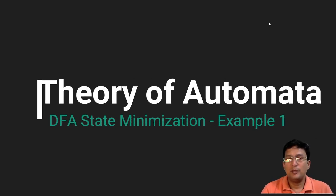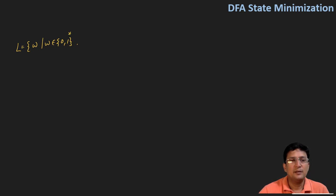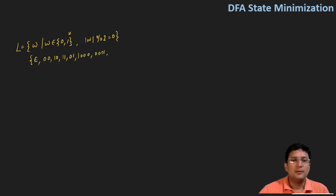In this lecture, we are going to discuss the minimization of the DFA. The minimization can be understood by taking an example. Let's say we have to draw a DFA for a language where the strings contain only zero and one characters, and the length of the string mod two equals zero — meaning we have even-length strings. So epsilon (zero length) is acceptable, any two-length string is acceptable, four-length string is acceptable, and so on.